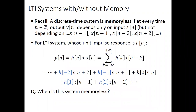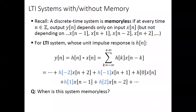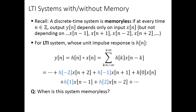Let's look at the memoryless property. A discrete-time system is memoryless if at every time n, the output y(n) depends only on input x(n) — not on x at other times. For an LTI system, we can check this from the unit impulse response h(n). Since y(n) = (h*x)[n] = Σ_k h(k)·x(n−k), spreading out terms for k=−2,−1,0,1,2, we see that y(n) depends on x(n+2), x(n+1), x(n), x(n−1), x(n−2), etc.